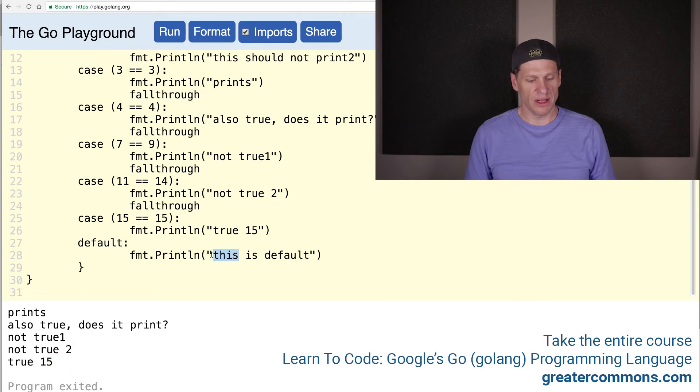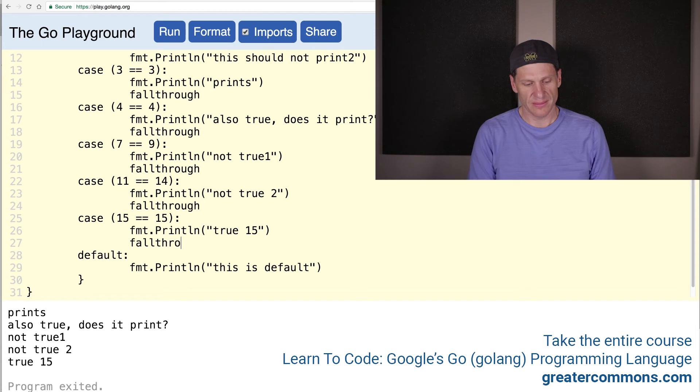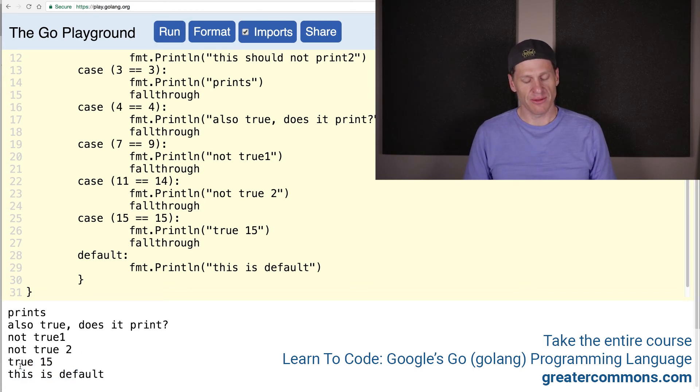True 15 printed, but the default didn't print. So if there was nothing that was true by default, the default would fire off. What happens if we have fall through here? This is default because you fall through to it. You're saying, hey, if this is true, then print the next one also. So you might be able to use that logic in some interesting way. So that's how we add fall through in.